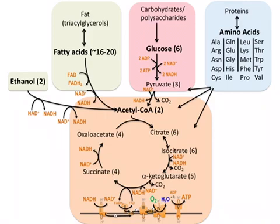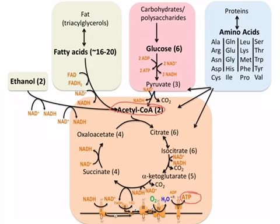Here's a summary of how we oxidize our macronutrients. Note the central role of acetyl-CoA — regardless of where we started, we end up producing lots of acetyl-CoA — and the central role of the TCA cycle and the electron transport chain to ultimately produce our ATP. I hope this was helpful.